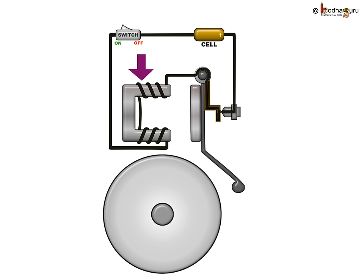It consists of a coil of wire wound on an iron piece bent to form U-shape like a horseshoe magnet. A spring-loaded arm made of an iron strip is kept close to the electromagnet.